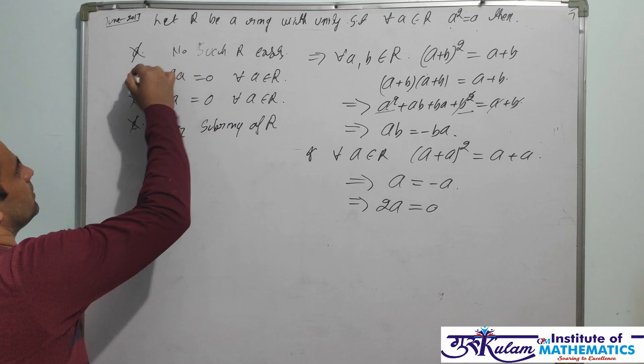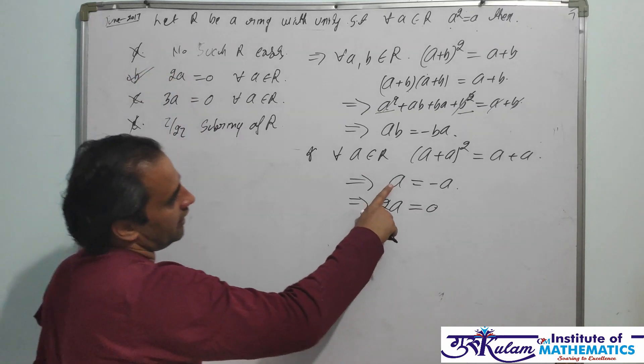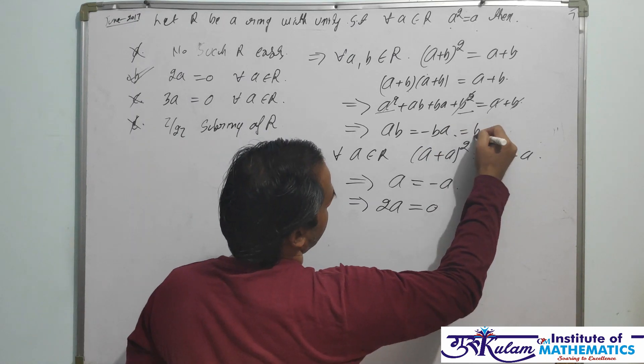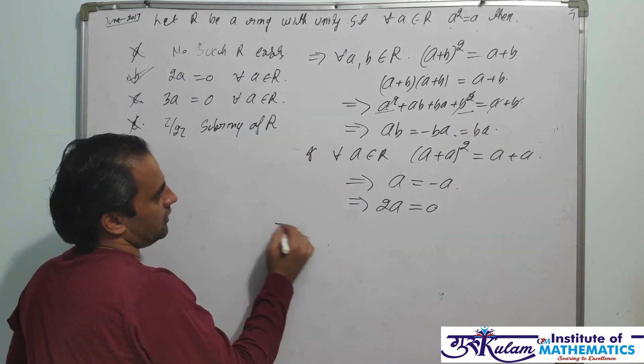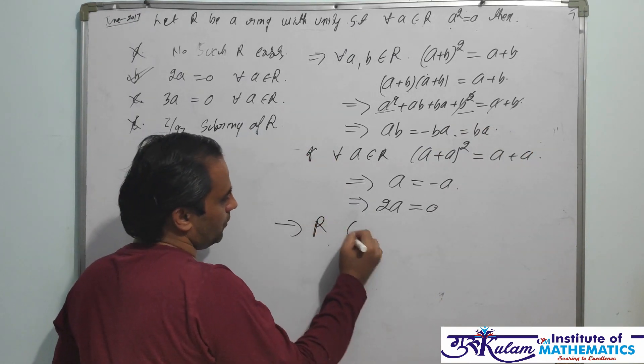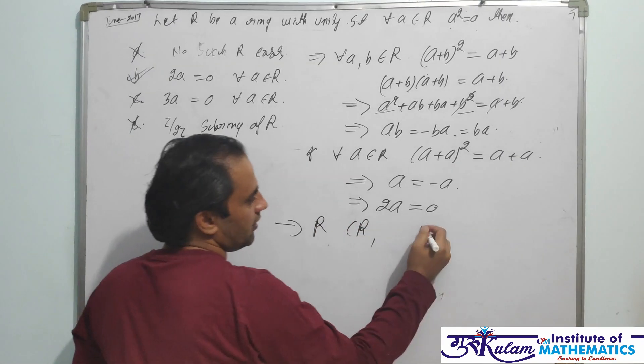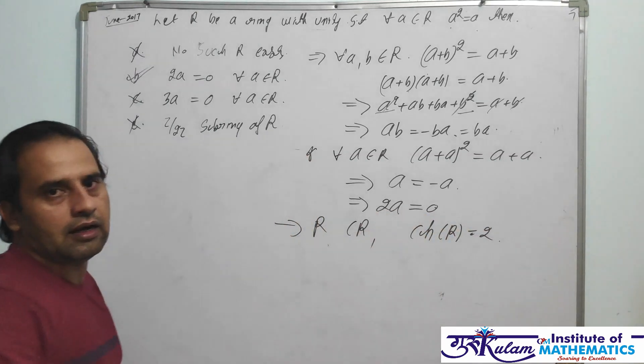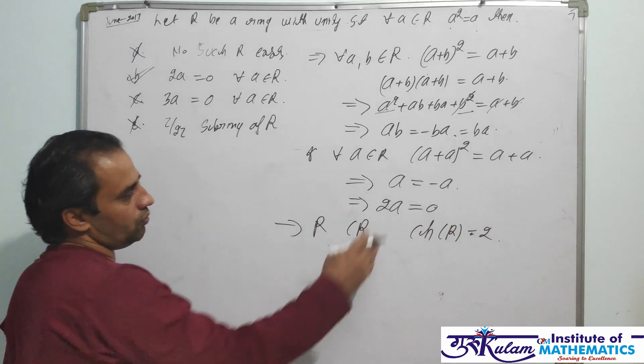Your second option must be true. And from AB + BA = 0, we have AB = -BA. So -BA can be written as BA. What properties do we have? This R must be a commutative ring. Second, characteristic of R must be 2.